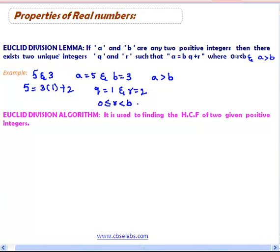To find HCF first consider two positive integers a and b such that a is greater than b.